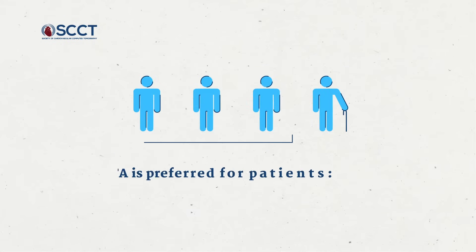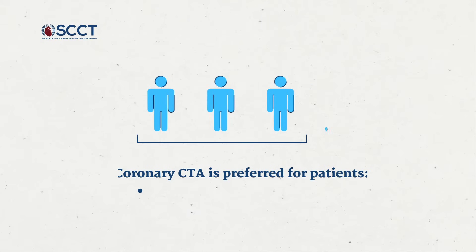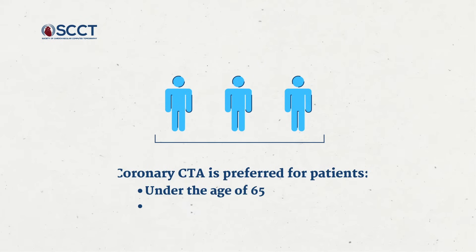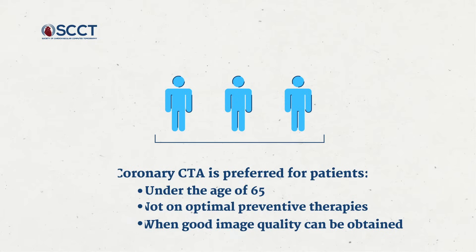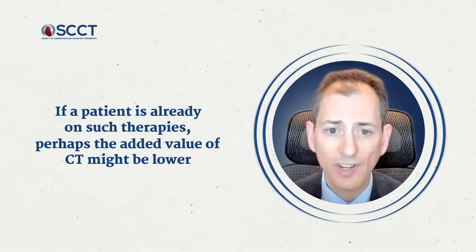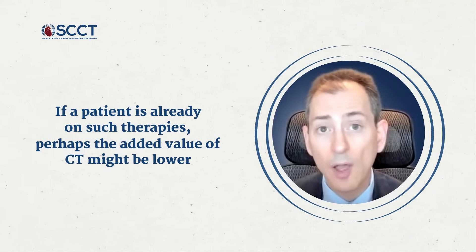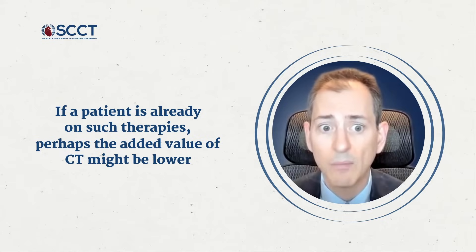Coronary CTA is generally preferred in those who are under the age of 65, those who are not on optimal preventive therapies, and when good image quality can be obtained. This is because most stress tests in this group will be normal. But if we detect plaque by coronary CTA, it may lead to the initiation or intensification of preventive therapies. Of course, if a patient is already on such therapies, perhaps the added value of CT might be lower.